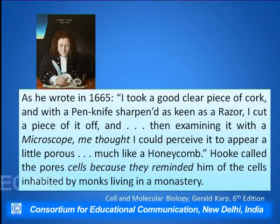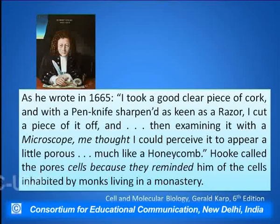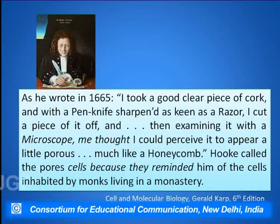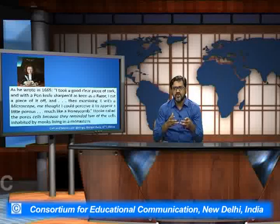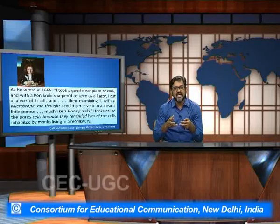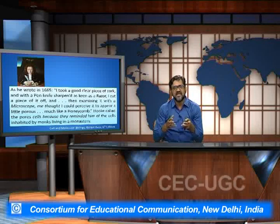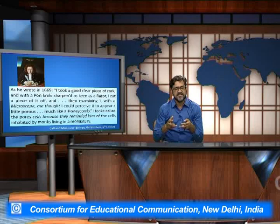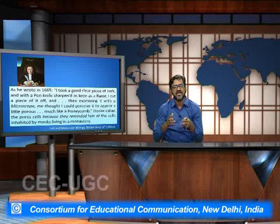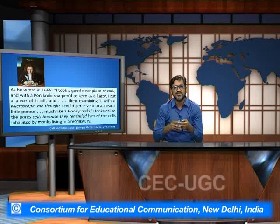As he wrote in his book in the year 1665, he wrote that he took a clear piece of cork and with a penknife sharpened as keen as a razor, he cut a piece of it off and examined it with a microscope, and thought that he could perceive it to appear a little porous, much like a honeycomb. For the first time, Robert Hooke could make out what exactly a cell looked like — like a honeycomb with porous cells present within them.